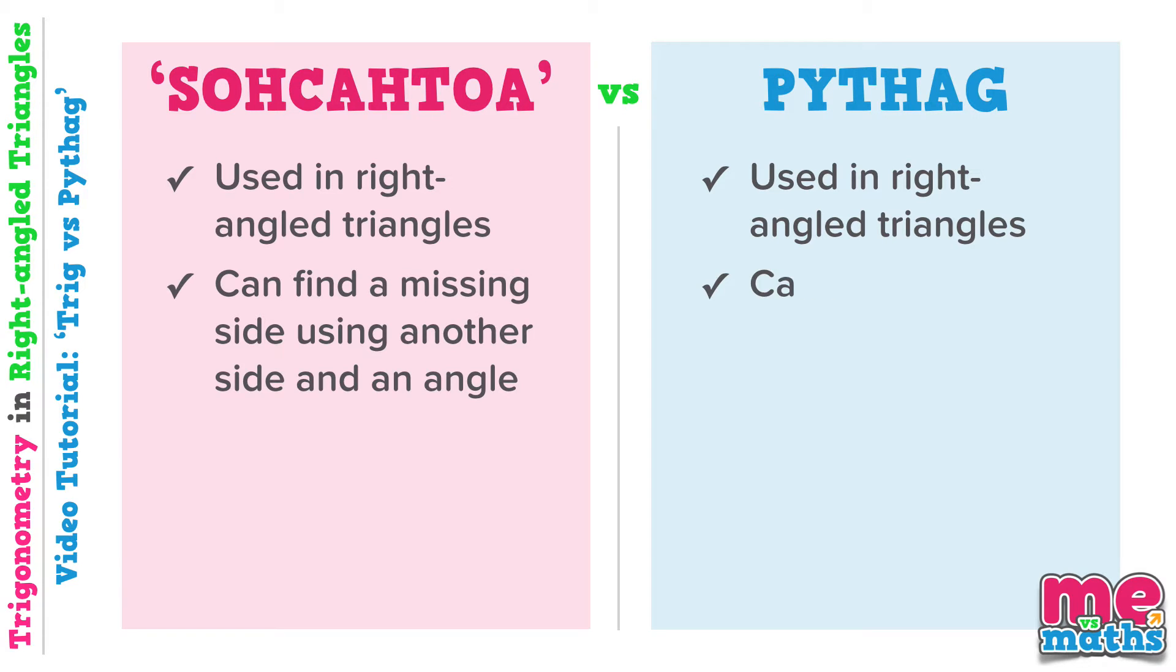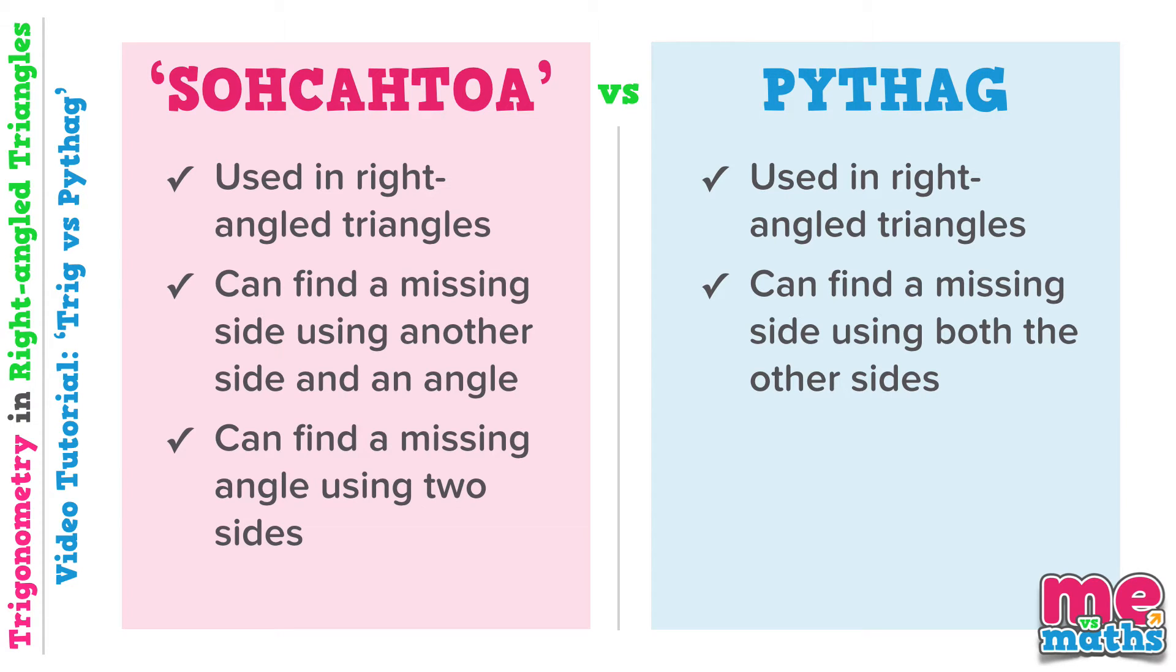Whereas with Pythagoras we need both the other sides. Also, trig can be used to find a missing angle as long as you know two of the side lengths, whereas Pythagoras can't be used directly to find an angle at all.